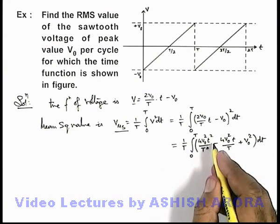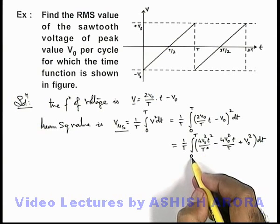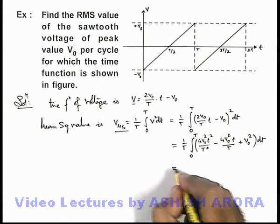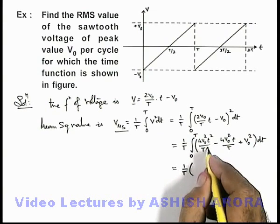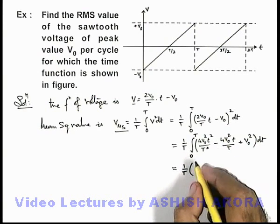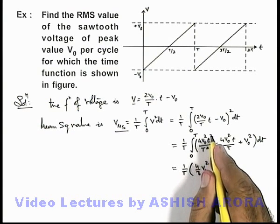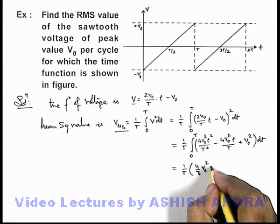If we integrate and substitute the limits, the upper limit is T and the lower limit is zero. The second term after integration will become zero. This will be (1/T), and after substituting the limit, this becomes (4/3)V₀²T minus...